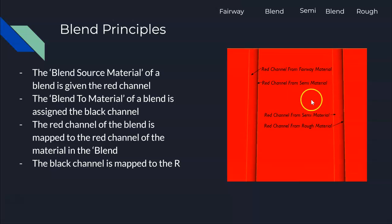Let me look at this a different way - same thing, I just zoomed in a little bit more and put some labels here. On this blend, the red channel comes from the fairway material which is here. This red channel here is the red channel of the fairway. The black channel of this blend is the red channel from the semi material. The red channel of this blend is the red channel from the semi material, and this black here in this blend is the red channel from the rough material.